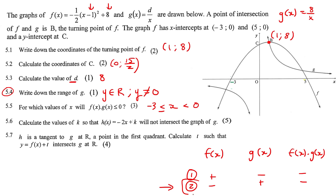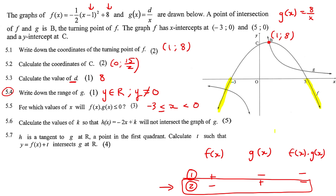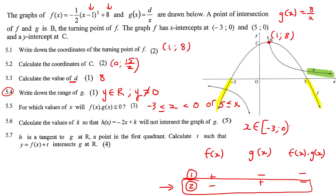Now scenario two: we look for where f(x) is negative (below the x-axis) and in that same area g(x) is positive (above the x-axis). We can see g(x) is above and f(x) is below over there. So the answer is x ≥ 5. Using interval notation, x ∈ [−3, 0) or [5, ∞).